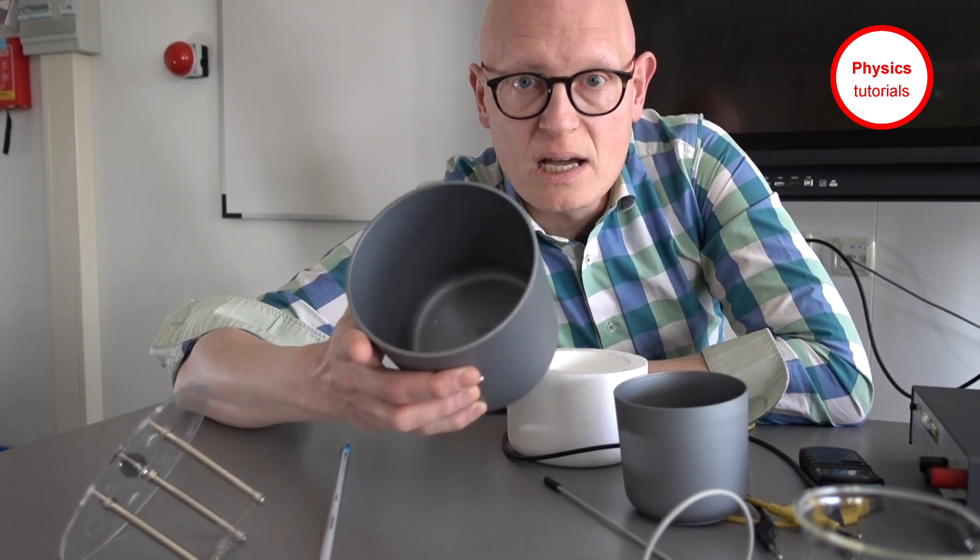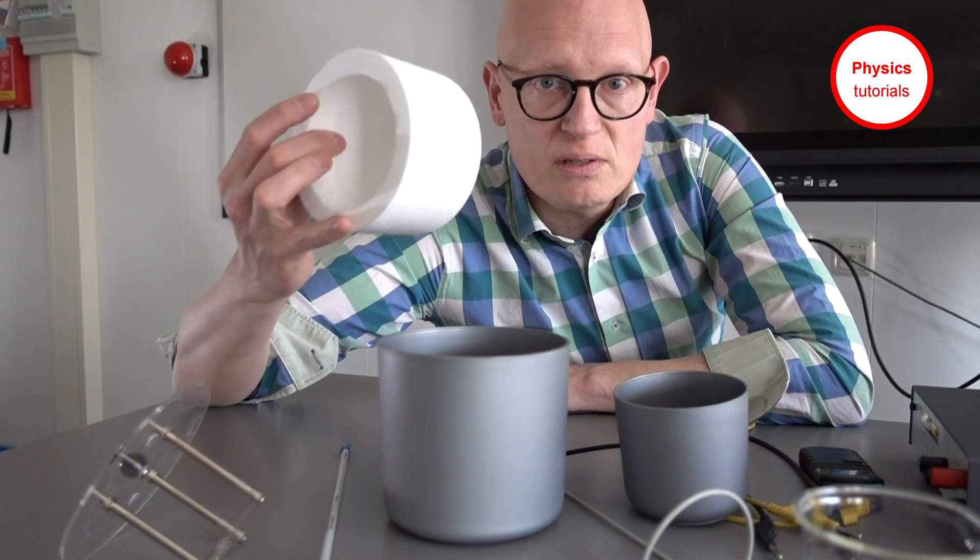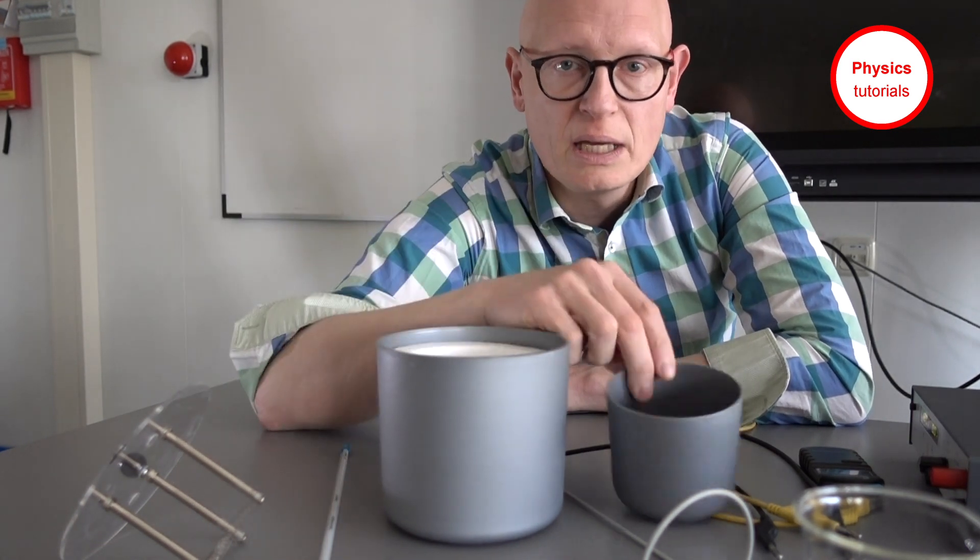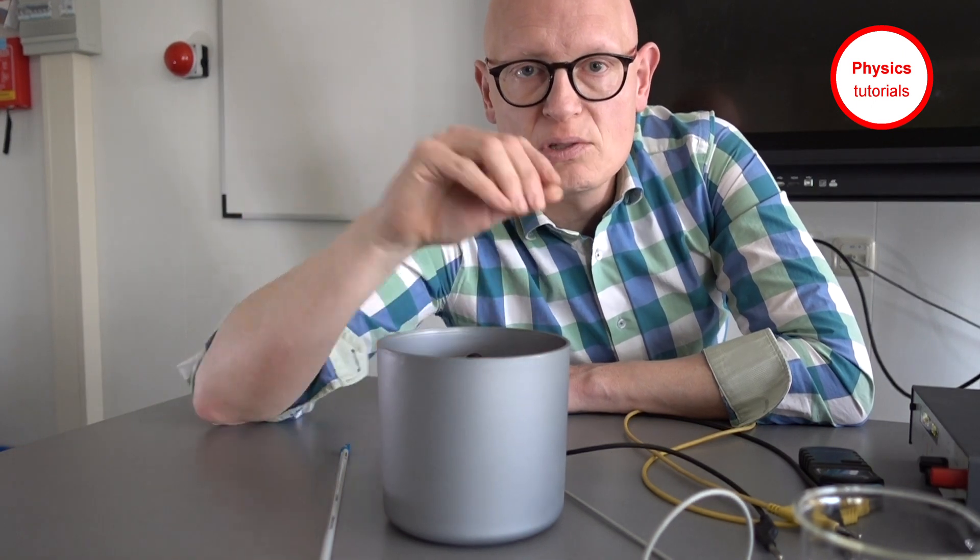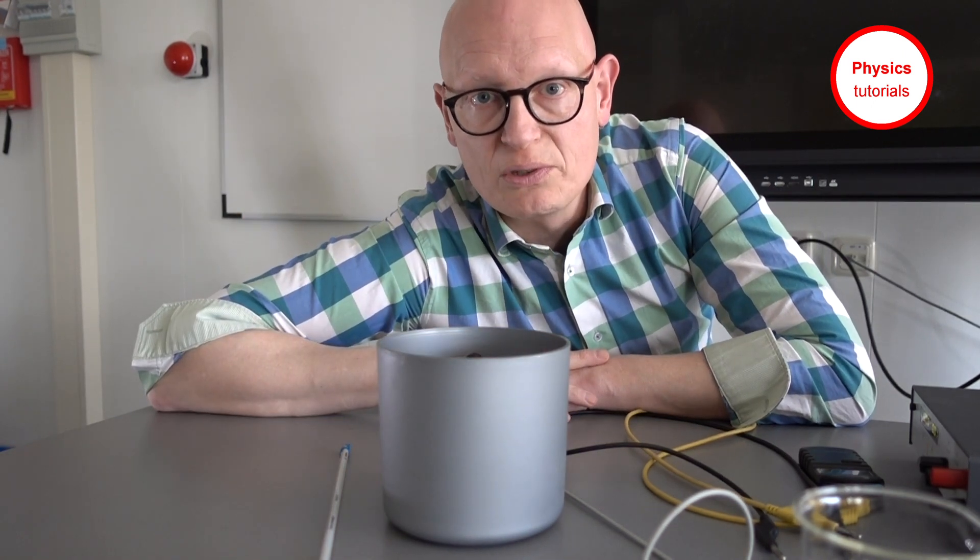Basically it's a big cup, some insulation material, a small cup, and a cap. Those are the main parts of a joule meter.